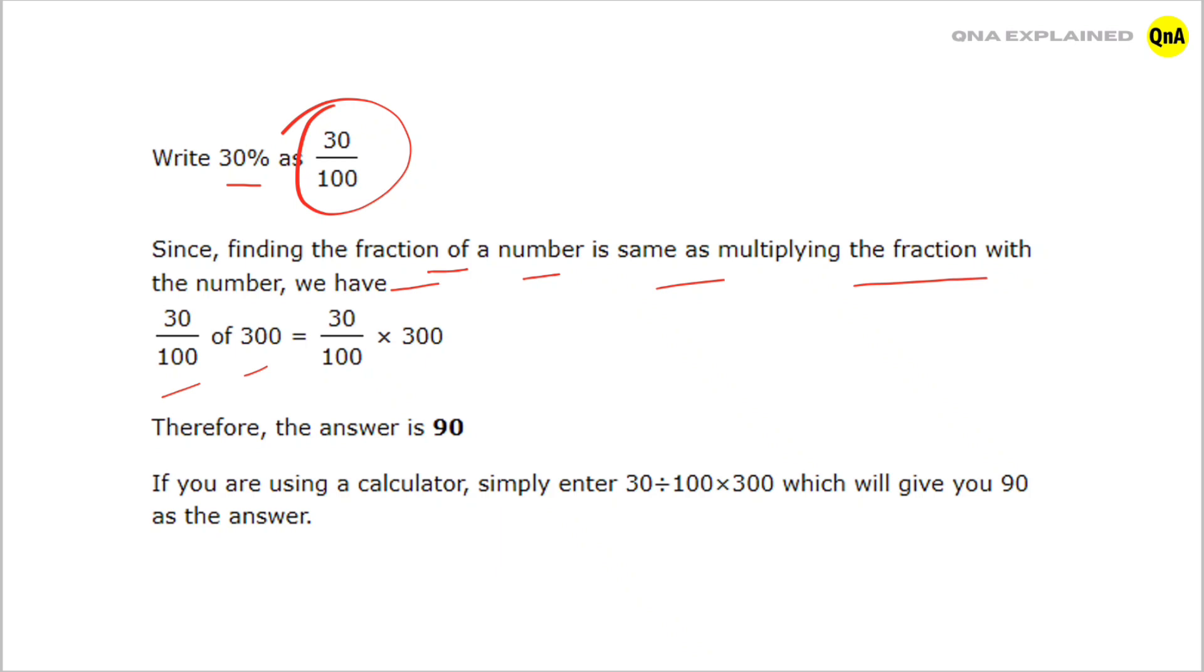First, we cancel out zeros. After canceling out zeros, we get 30 multiplied by 3. 3 times 3 is 90, therefore the answer is 90. If you are using a calculator, simply enter 30 ÷ 100 × 300, which will give you 90 as the answer.